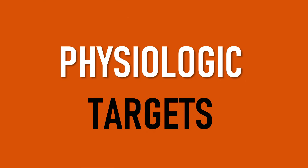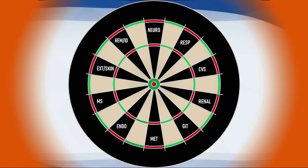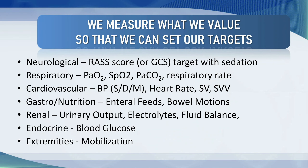It's important, once you've put all of that together, that you also identify the physiological targets for each one of the patient's systems. We measure what we value so that we can set our targets. Neurological system: a RASS score or GCS score, depending on whether the patient is sedated or not. Respiratory system: PaO2, saturation, PaCO2, respiratory rate. Cardiovascular system: blood pressure (systolic, diastolic, mean), heart rate, stroke volume, stroke volume variability. Gastrointestinal system and nutrition: enteral feeds target, bowel motions, TPN, etc. Renal: urinary output and fluid balance. The electrolytes — where do we want to see them? Sometimes we might want a higher magnesium and potassium than the so-called normal limit on the biochemistry panel. The blood glucose and the extremities — how much we want to mobilise them and what we want to do with them.